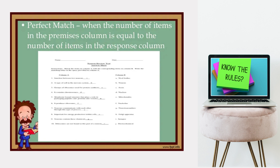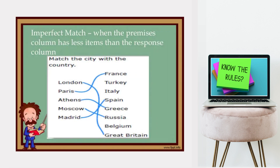There are two types of matching type of test: perfect match and imperfect match. Perfect match means the number of items in the premises column is equal to the number of items in the response column — for example, 10 items in column A and 10 responses in column B. Imperfect match is when the premises column has fewer items than the response column — if you have 10 items in column A, your responses should be 11 or more in column B. It is advised to use an imperfect match as much as possible to avoid mere elimination or guessing by students.